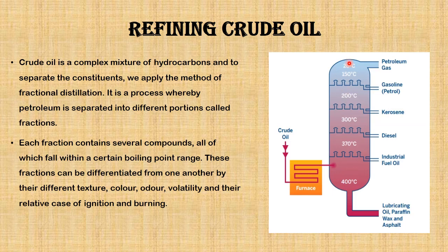Below the fractionating column is where we have the highest temperature, and the lowest temperature is 20 degrees Celsius at the top. As you go up the fractionating column the temperature reduces, and all those fractions that have various boiling points will separate out from these columns. Each fraction has a pipe that separates it from the others.